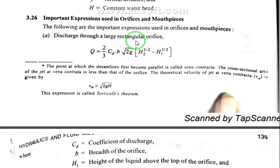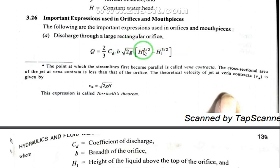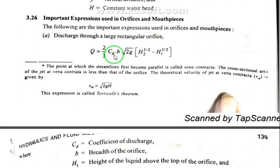Discharge through a large rectangular orifice: Q is equal to two-thirds times Cd times b times square root of 2g, multiplied by the bracket (h2^(3/2) minus h1^(3/2)). So Q, the discharge through a large rectangular orifice, equals (2/3)·Cd·b·√(2g)·(h2^(3/2) − h1^(3/2)).